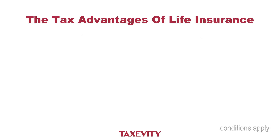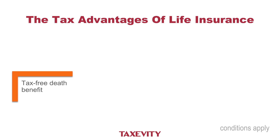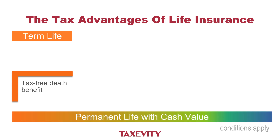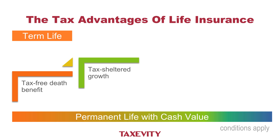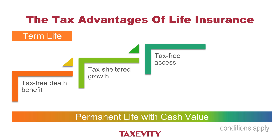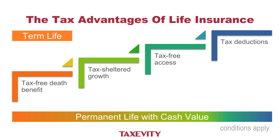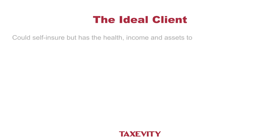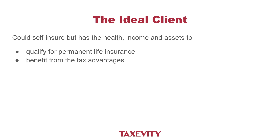Creative thinking says that insurance brings tax planning opportunities. The actuarial motto is that risk is opportunity. Life insurance bundles unique tax advantages. First, there's the tax-free death benefit — that's something you get with term life insurance, and by itself is very valuable. Beyond that, there is permanent life insurance with a cash value, which gives additional advantages: tax-sheltered growth on the investments inside the insurance policy up to the maximum tax actuarial reserve, or MTAR; tax-free access if you borrow against the equity in the policy; and tax deductions if the proceeds are used to invest in suitable investments. The ideal client could self-insure but has the health, income, and assets to qualify for permanent life insurance and benefit from the tax advantages.